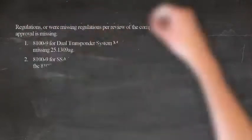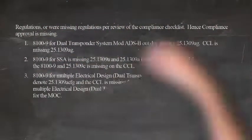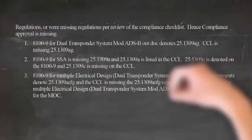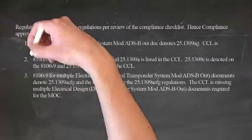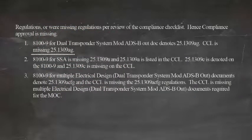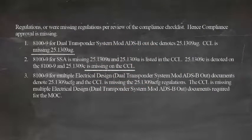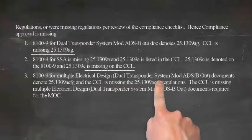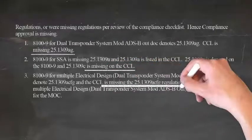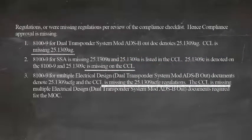This wasn't a one-time-only discrepancy, but is systemic. During the audit, they also found an 8100-9 that included 25.1309A and G, but those regulations weren't listed in the CCL. Then, for System Safety Analysis (SSA), the 8100-9 listed 25.1309C, but the CCL listed 25.1309A. Or, we had a substantiation report that called out five subparagraphs for 1309, but no 1309 regulations were referenced in the CCL at all.